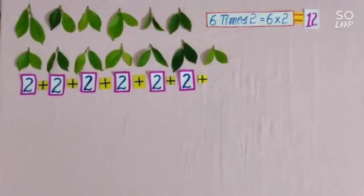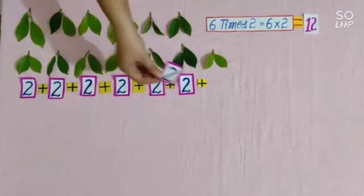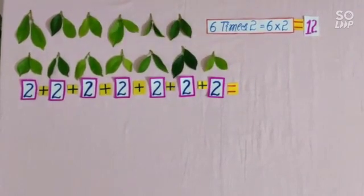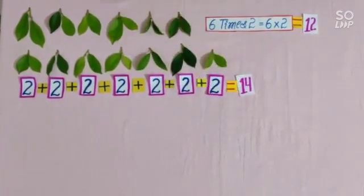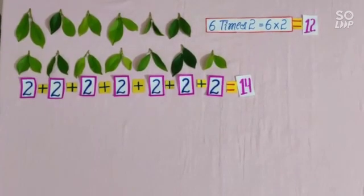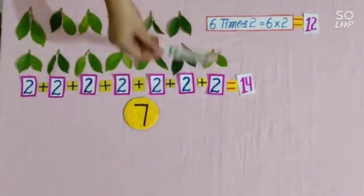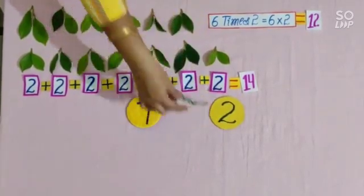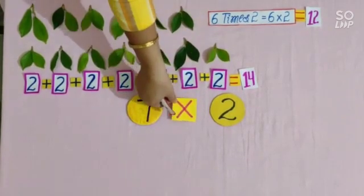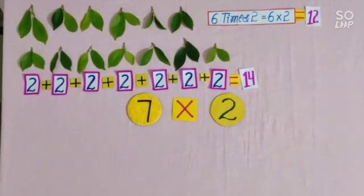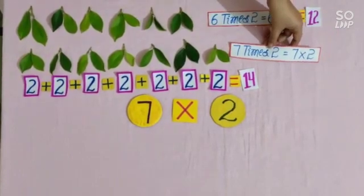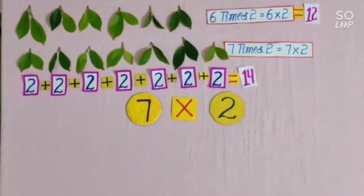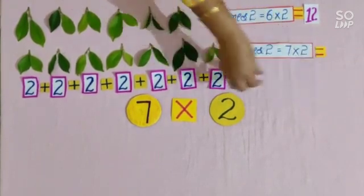Students, if we take 2 more leaves, then we have 14 leaves. So students, we have 7 groups of leaves. So we will write it: 7 times 2. In place of times, we will put the sign of multiply. Then students, we will write: 7 times 2 is equal to 7 multiplied by 2 is equal to 14.